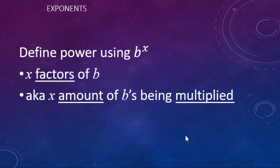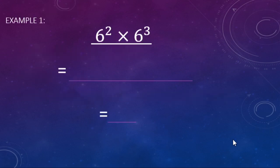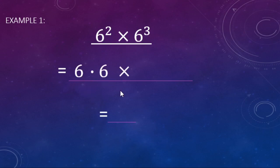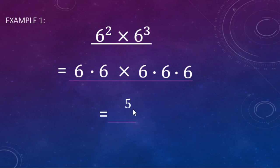Things being multiplied are called factors. Here we have six to the second power, or six squared, times six cubed, or six to the third power. This first part is saying two factors of six — two sixes being multiplied: six times six. Then we have three sixes being multiplied: six times six times six. Looking at the total number of sixes, we have one, two, three, four, five — five sixes being multiplied.